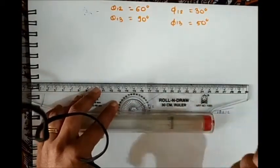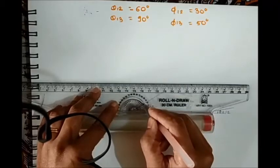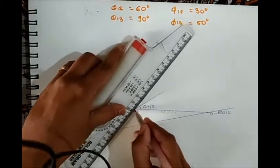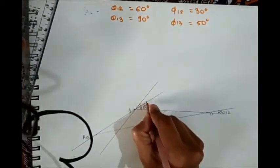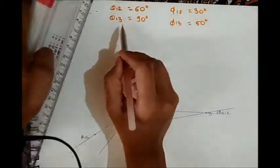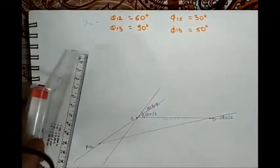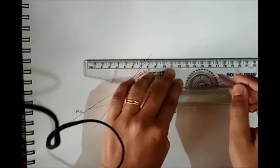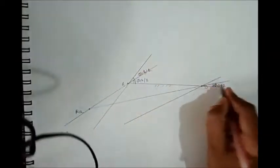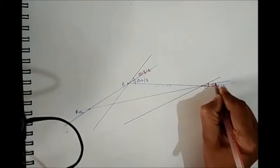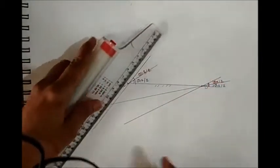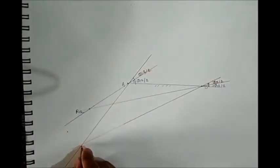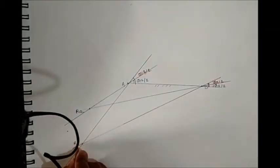For the third position, rotate AD through an angle equal to θ13/2. Since θ13 = 90°, θ13/2 = 45°. Similarly, at D rotate by φ13/2 = 25°, since φ13 = 50°. Extend these lines so they intersect at one point — that is R13, the relative pole for the third position.